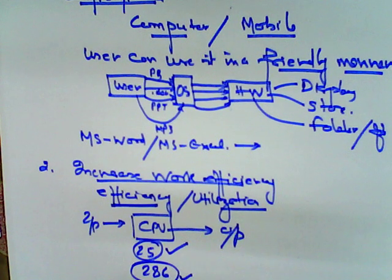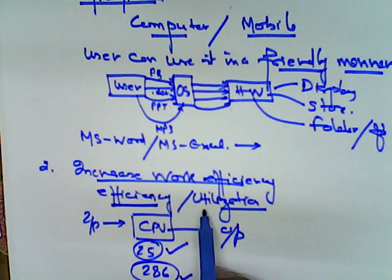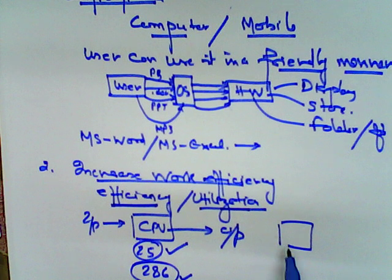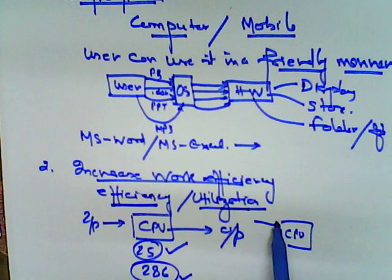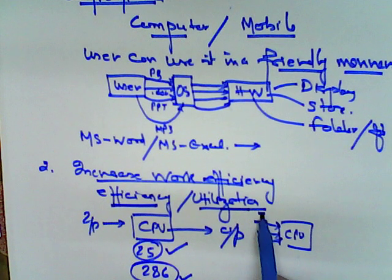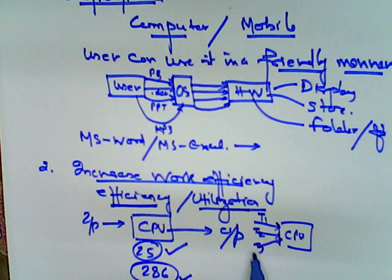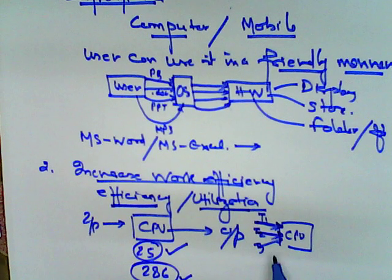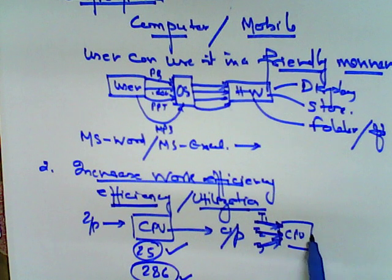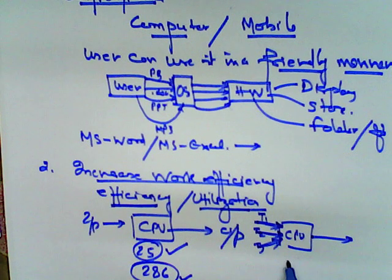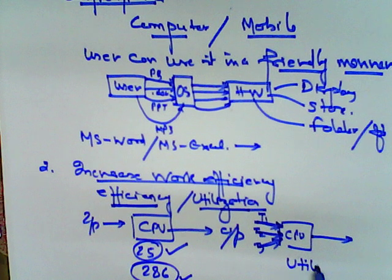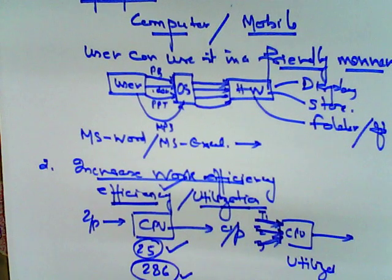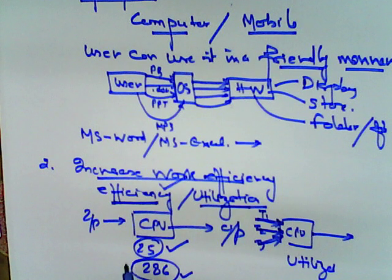Utilization means if you are having a CPU and you are giving different works - task one, task two, task three - after first task immediately the second task should start, immediately the third process. Then we say that the CPU is properly utilized. So the objective of the operating system is to see that the CPU should be able to process the things efficiently.